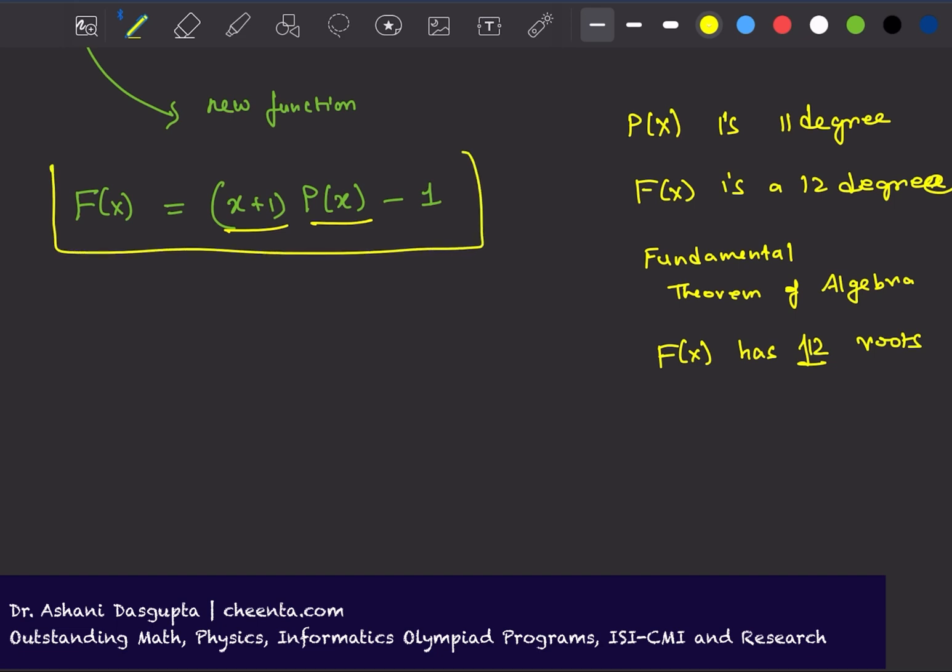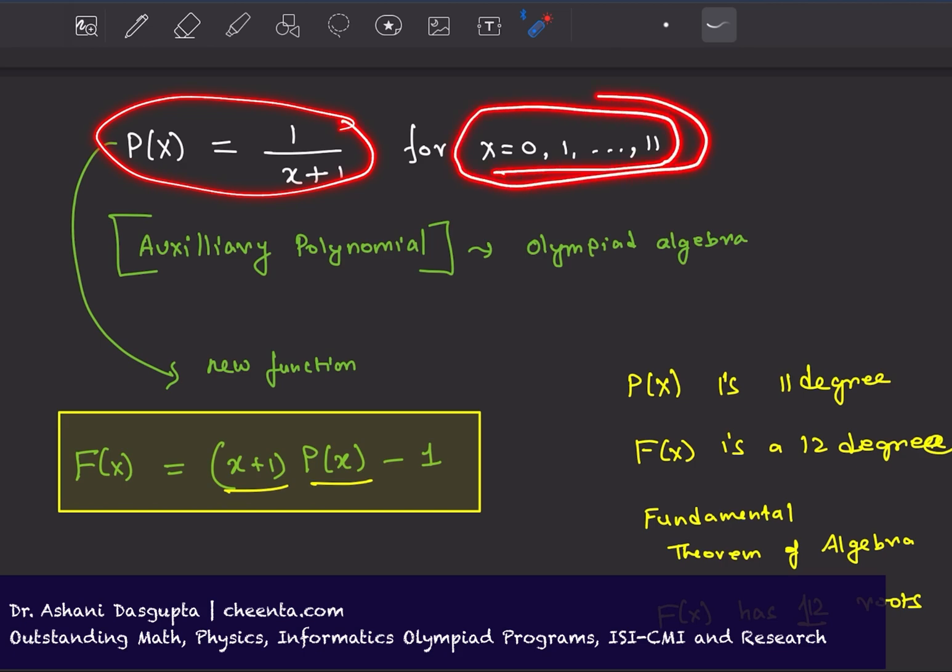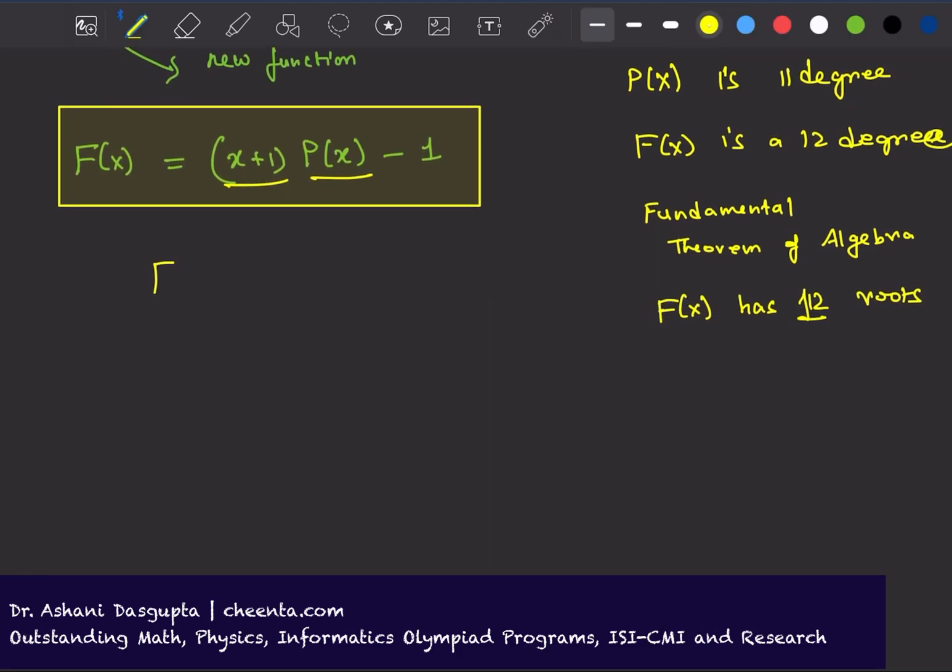We will focus on this. It is given that P(x) equals 1 over x plus 1 for these 12 values. That means if I plug in these 12 values, if I calculate F(0), F(1), up to F(11), each of them will be equal to 0. So these are the 12 roots that the function has.